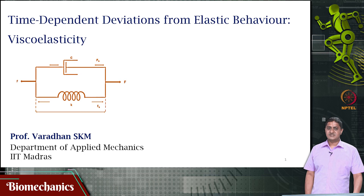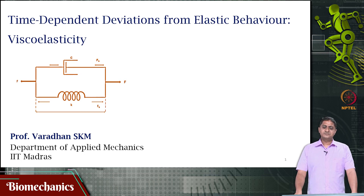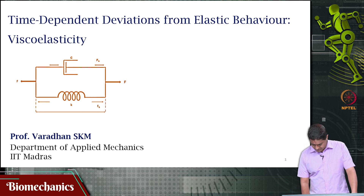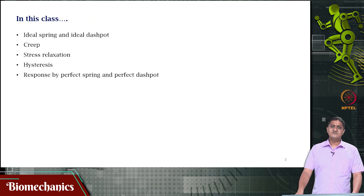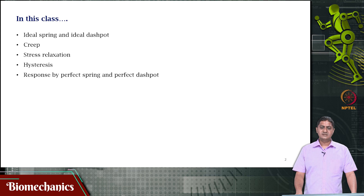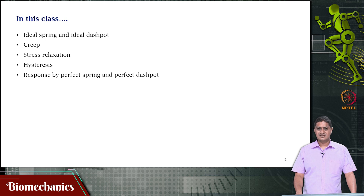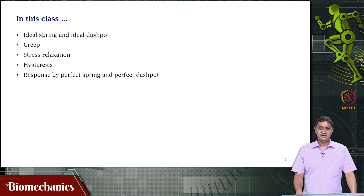Viscoelasticity refers to materials that exhibit both viscous and elastic behavior. In this video, we will be looking at the characteristics of an ideal spring and an ideal dashpot, what is creep, what is stress relaxation, and what is hysteresis. These three are manifestations of viscoelasticity, along with the response of a perfect spring and a perfect dashpot.